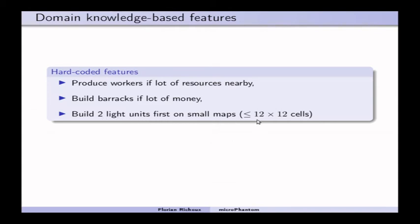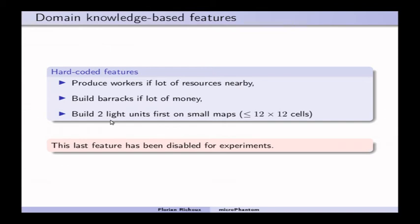So, maps smaller than 12 by 12 cells. About this last feature, it has been disabled for experiments, because this feature will change, is changing the production behavior. So, to have a fair evaluation of the unit production problem solving, we disabled this feature.